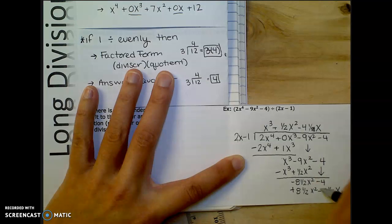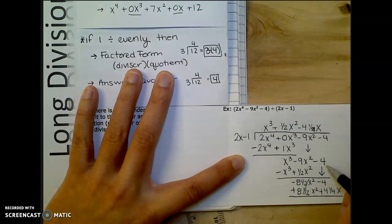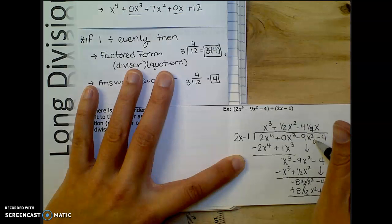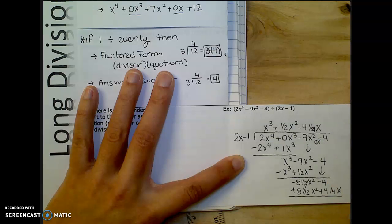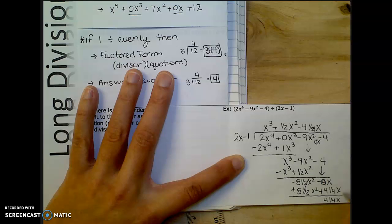And so when I subtract or change the signs completely the x squareds cancel out. Oh, I forgot. Oh my goodness. That's why we don't forget. Zero x. That should not be here. This should be a zero x like that. And then we're at 4 and one fourth x. And lastly, I gotta drop down my negative 4.